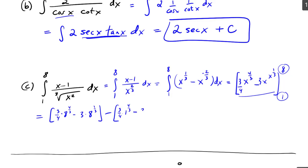minus 3 times 1 to the 1/3. Okay, so that should be 3/4 times 8 cube rooted is 2, to the 4th is 16, minus 3 times 2 is 6, minus 3/4 minus 3. Okay, so we